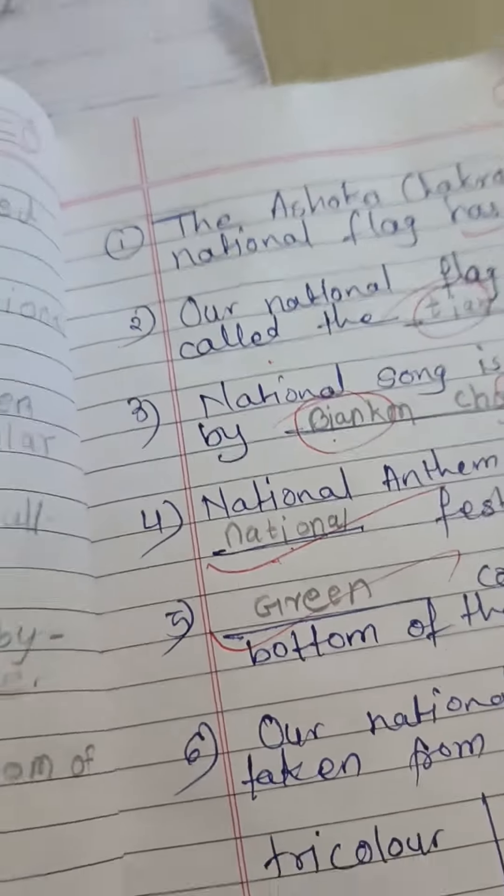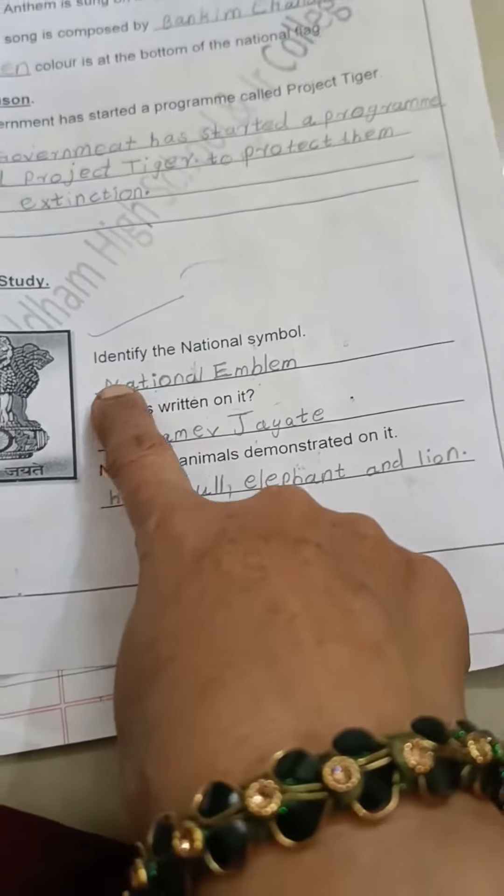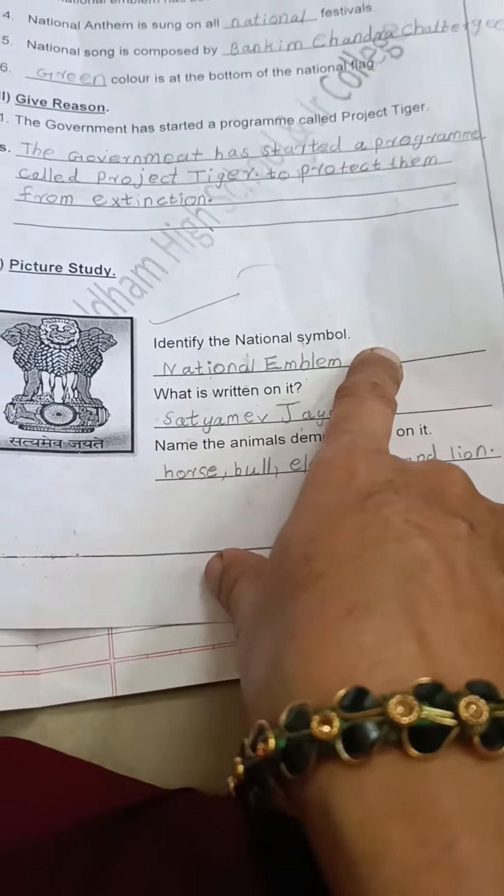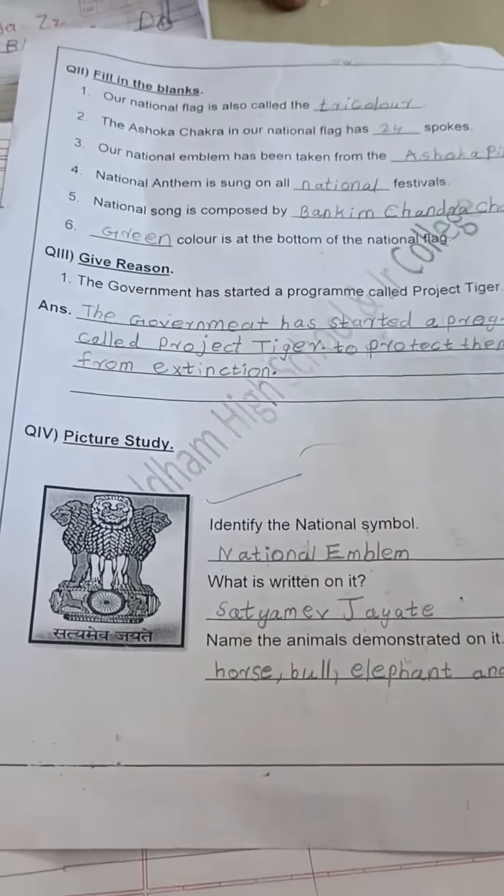Chalo, now next. What do we have here? This one now you continue. What is given here? Identify the National symbol. Which symbol it is? National emblem. Chalo, read the spelling. What do we have here?